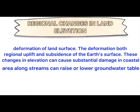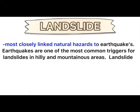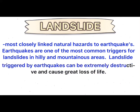Geographers categorize regions in two basic ways: physical and cultural. Physical regions are defined by landforms such as continents and mountain ranges, climate, soil, and natural vegetation. Landslide is one of the most closely linked natural hazards to earthquakes — earthquakes are one of the most common triggers for landslides in highly mountainous areas. Landslides triggered by earthquakes can be extremely destructive and cause great loss of life. A landslide is defined as the movement of a mass of rock, debris, or earth down a slope.